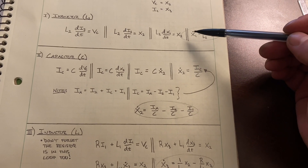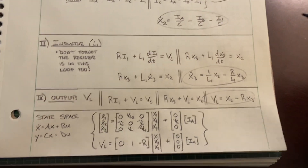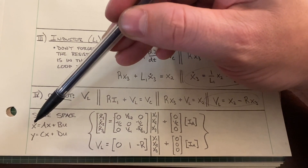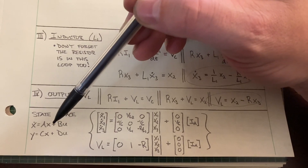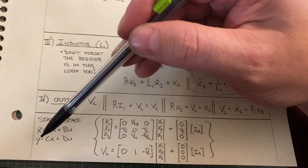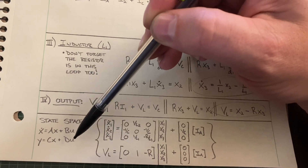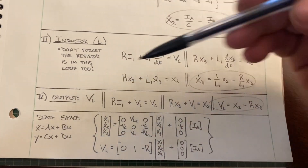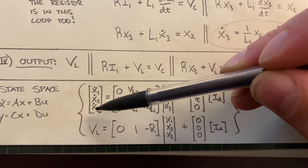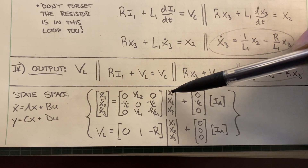We have our three state space variable equations and our output. Let's write the state space for this system. The standard format is X-dot equals A times X plus B times U, where U is the input. And Y, which is the output, equals C times X plus D times U. We have three state space variables, so X-dot with components X1-dot, X2-dot, and X3-dot equals our A matrix times X with components X1, X2, X3.